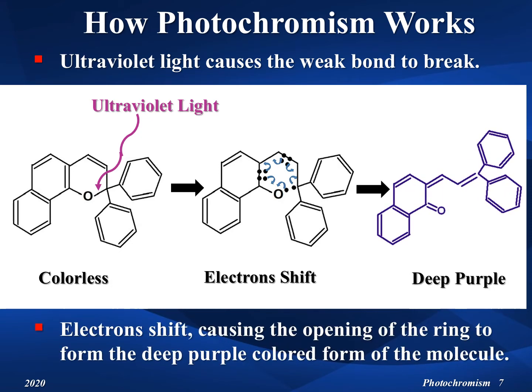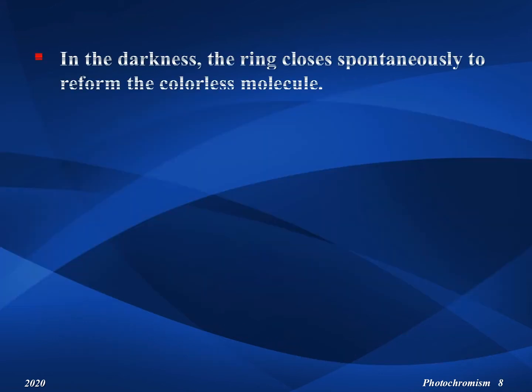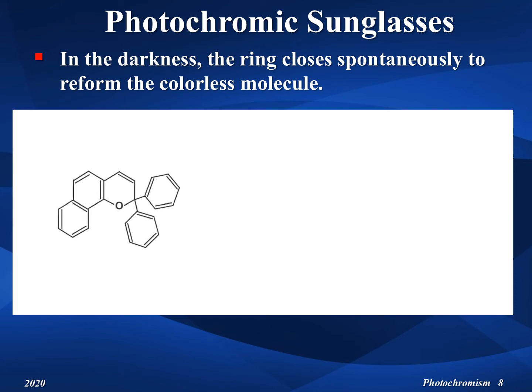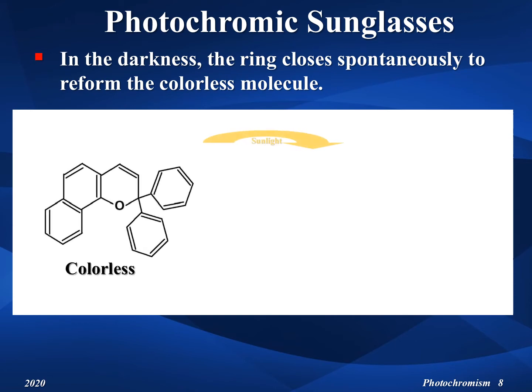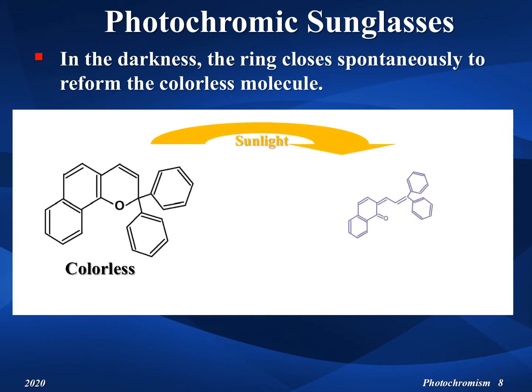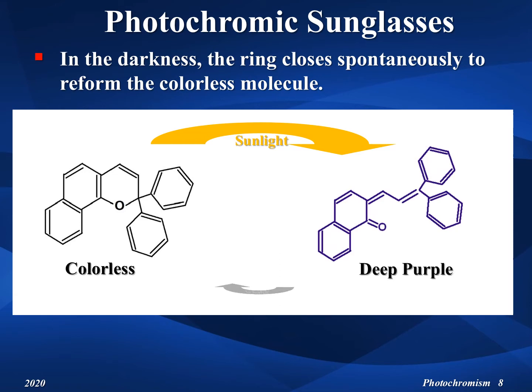As shown in the animation, when the weak bond breaks, the electrons shift positions, causing the opening of the ring and formation of the structure shown on the right. This new form of the naphthopyran molecule has a deep purple color. This diagram shows that the ring closes spontaneously in darkness, to reform the colorless form of the naphthopyran molecule.